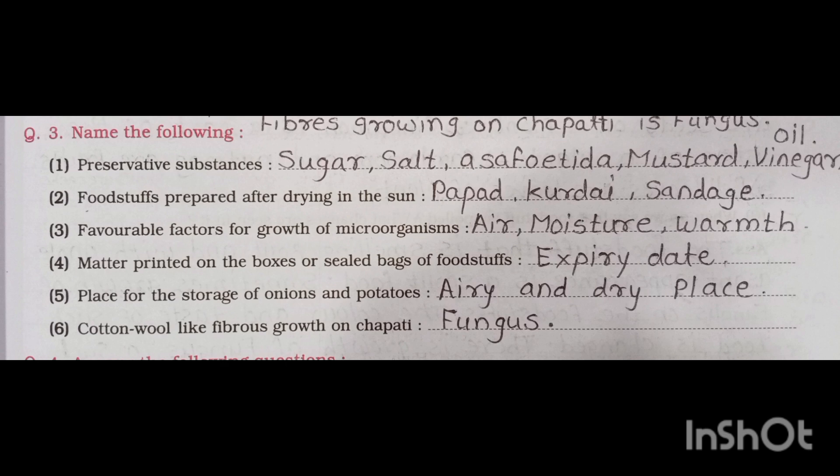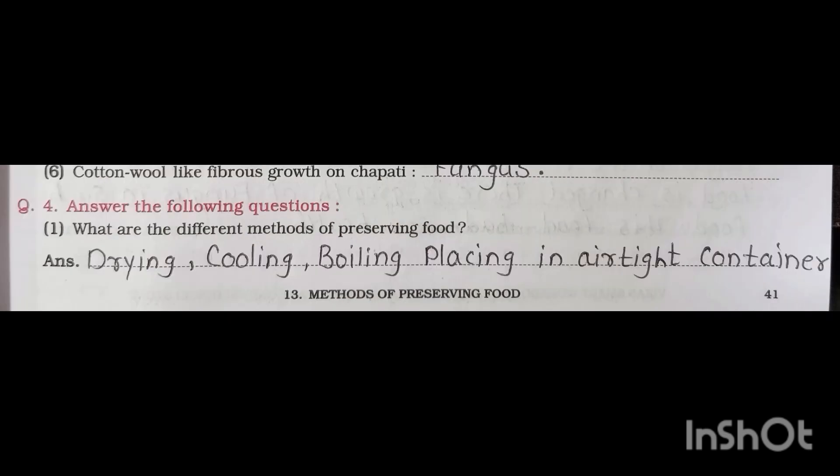Fifth one: place for the storage of onions and potatoes — answer: airy and dry place. Sixth one: cotton wool-like fibers growing on chapati — answer: fungus.